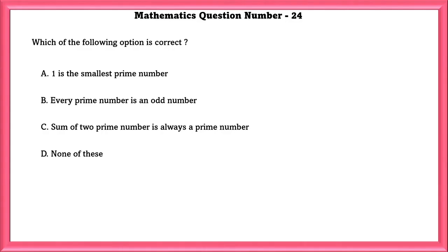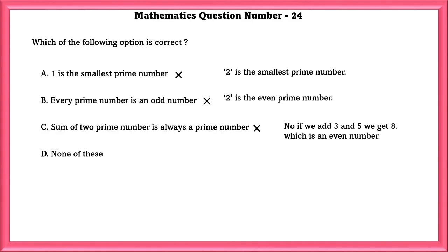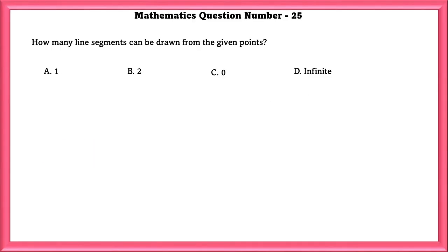Mathematics Question Number 24. Which of the following option is correct? 1 is the smallest prime number. Wrong. 1 is neither prime nor composite. 2 is the smallest prime number. Every prime number is an odd number. Wrong. 2 is the smallest even prime number. Sum of 2 prime numbers is always a prime number. No. If we add 3 and 5 we get 8, which is an even number. So the answer is D, none of these.